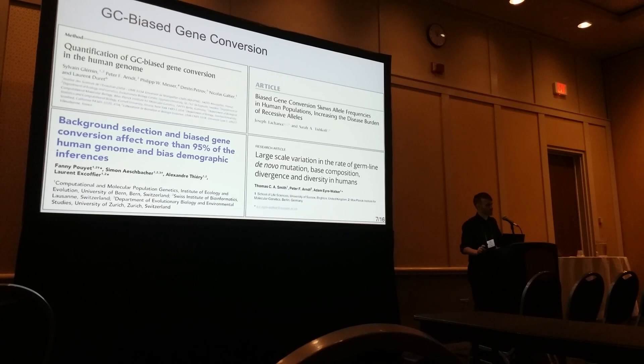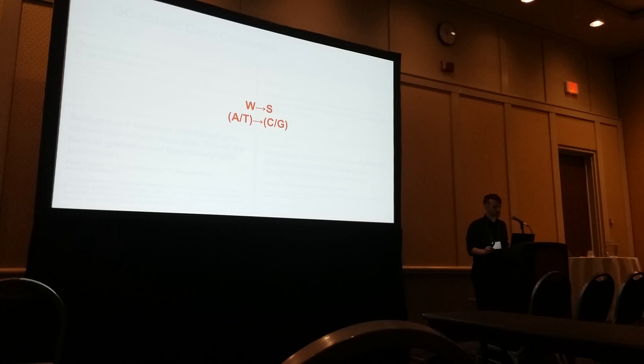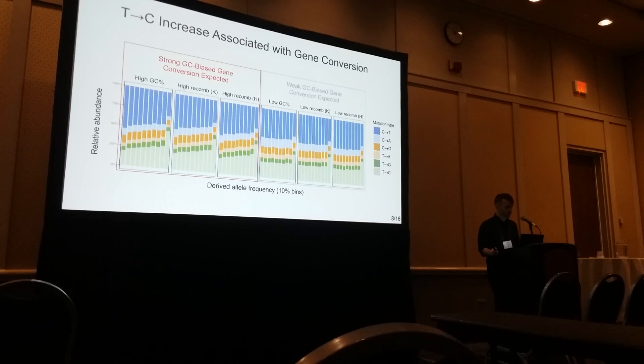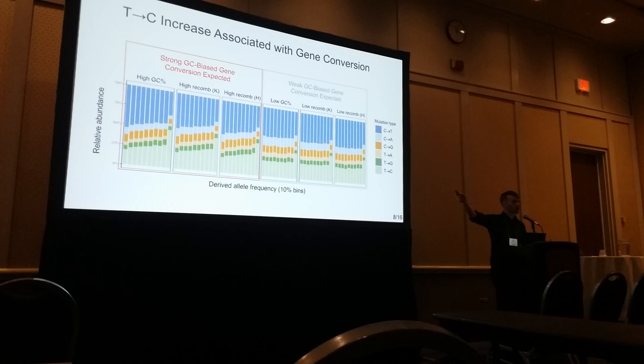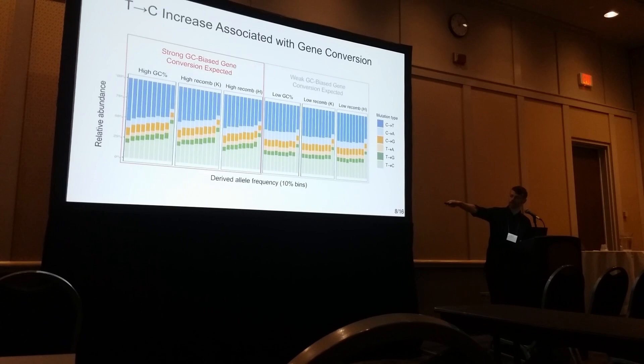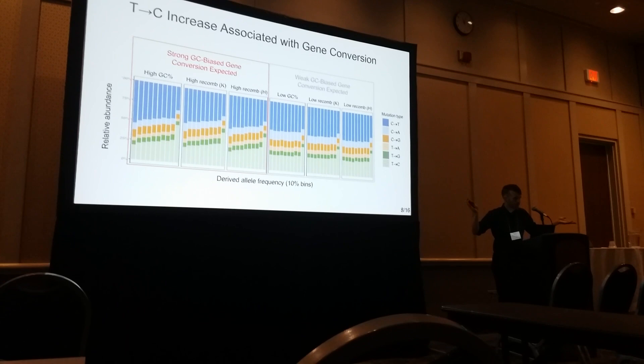There's been an increasing literature on this phenomenon called GC-biased gene conversion. Typically, these studies group all AT alleles together as weak base pairs, and group CG together as strong base pairs. What we wanted to do is not lump them together, but look at all six individually. The first thing we notice is that those regions of the genome associated with high recombination — which you'd expect to be associated with high gene conversion — indeed show the greatest trend in terms of increasing T-to-C from very rare to very common. Those regions not expected to be associated with gene conversion show less of a striking trend — consistent with GC-biased gene conversion driving this signal.